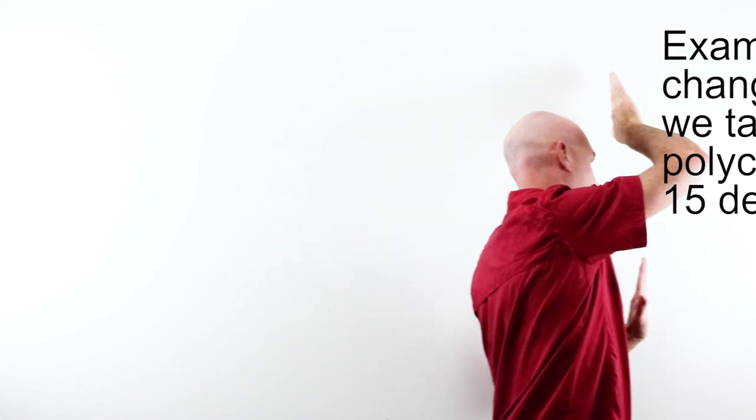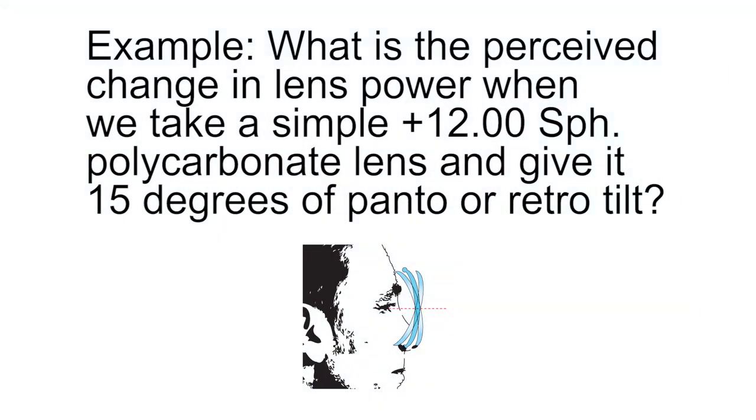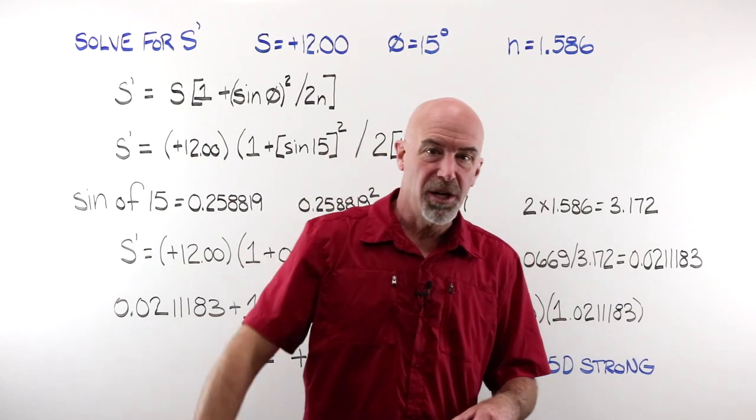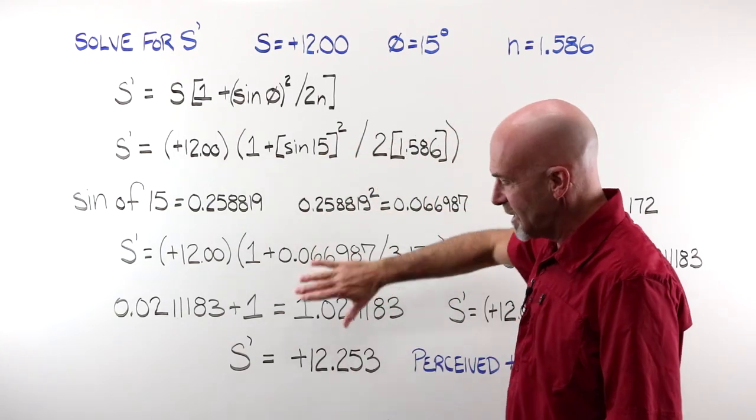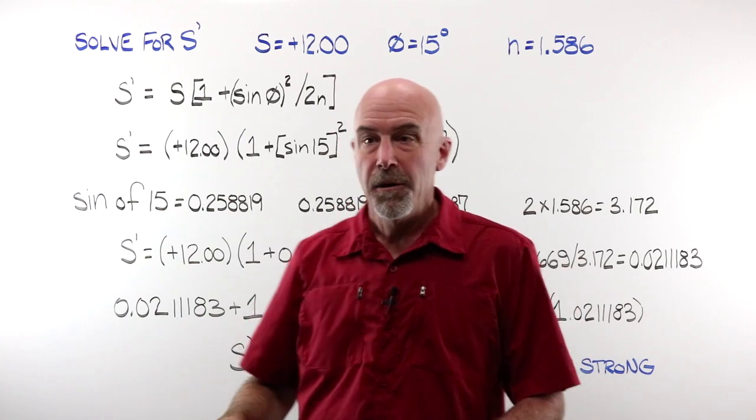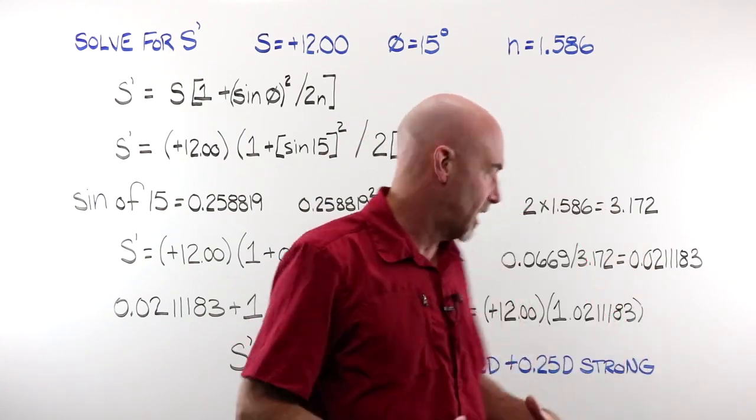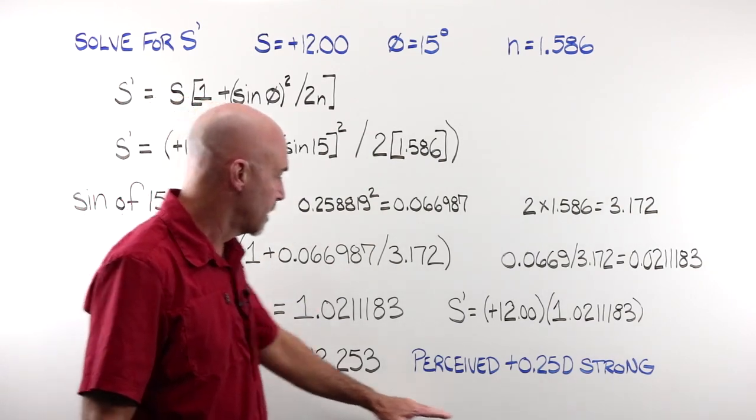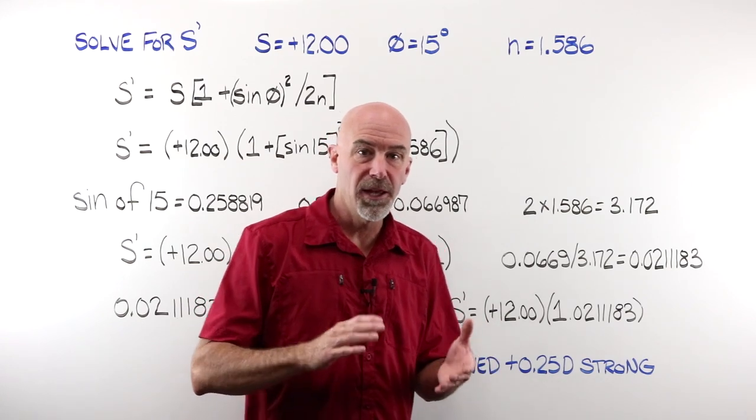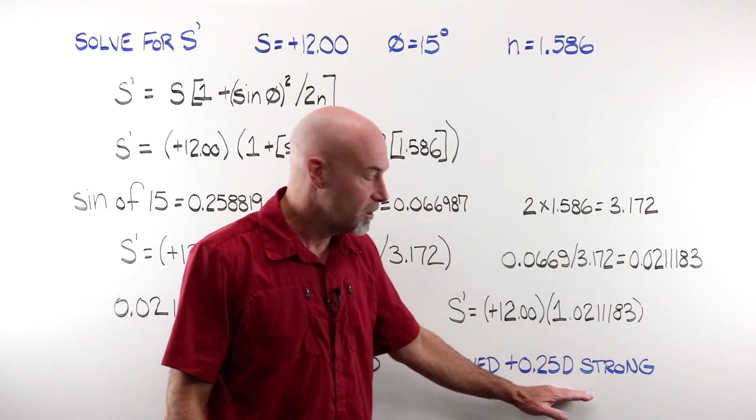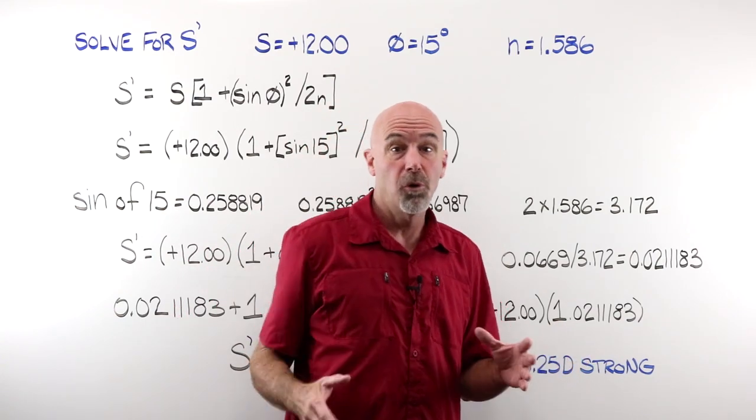We're gonna take a very simple plus 12 sphere lens and we're gonna tilt it 15 degrees. And that lens is going to be made out of polycarbonate so of course it has an index of refraction of 1.586. I never ever hide behind the fact that I am not good at math. What I can take away from here is the concept, the idea. I can work through all of this and I can recognize that tilting a lens has a perceived effect on the lens power and I can come to a mathematical conclusion of how much that is for my brain.